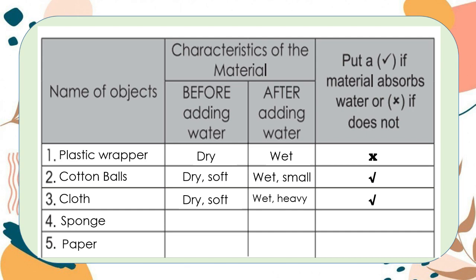For number four, sponge — it is dry and soft. As you can see in the video, it also has lots of tiny holes. After putting it into the water, it becomes wet and heavy. The material absorbs water. It's a check. And lastly, the paper — before adding water, it is dry and thin. After adding water, it becomes wet and easily torn. It absorbs water. It's a check.